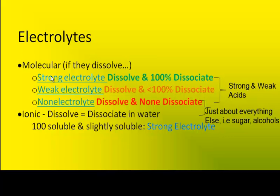It turns out there's a small handful of molecules that do become ionic when they are placed in water. For the most part, they're acids and bases. I just listed acids here, strong and weak, just to limit our discussion because we don't really have to go crazy with this.